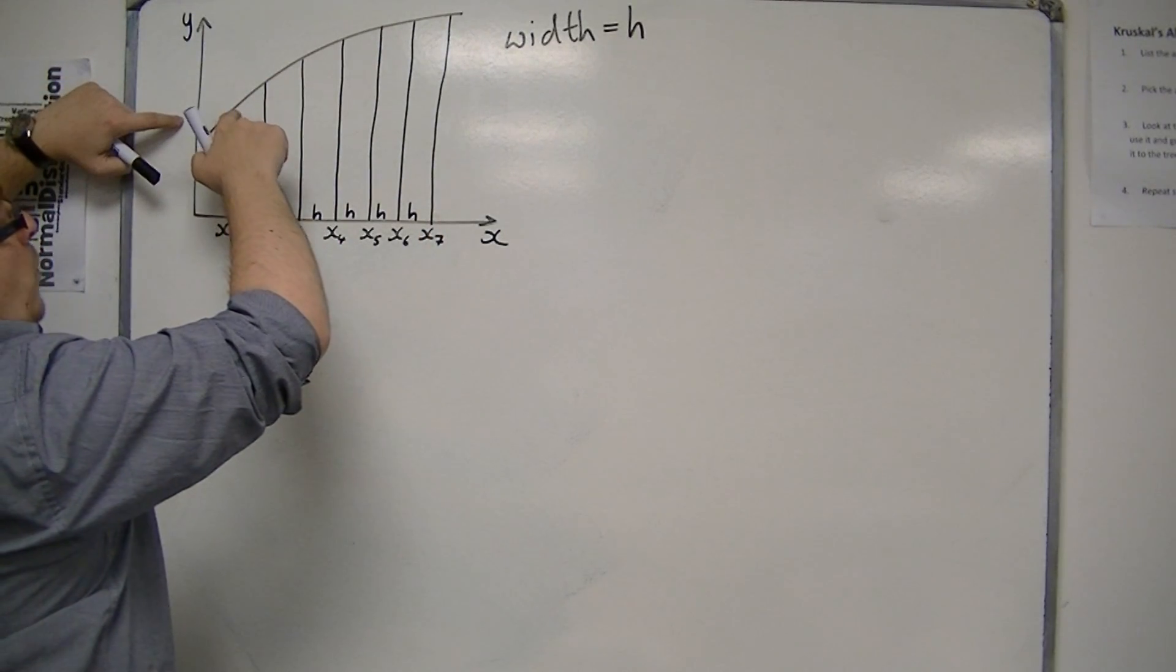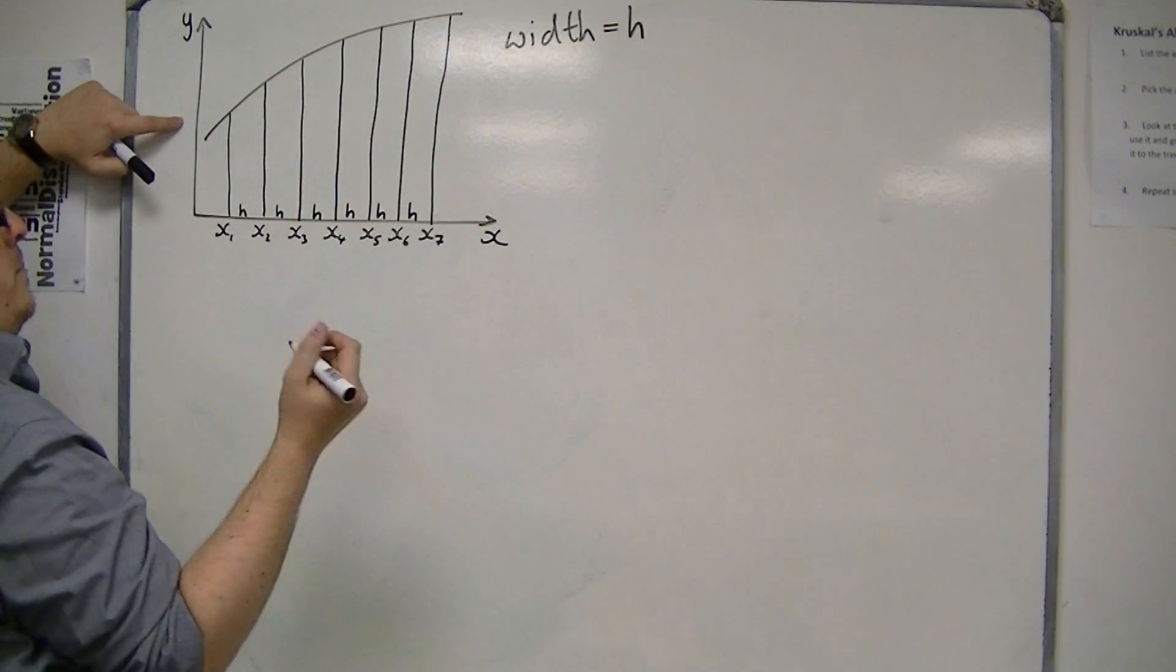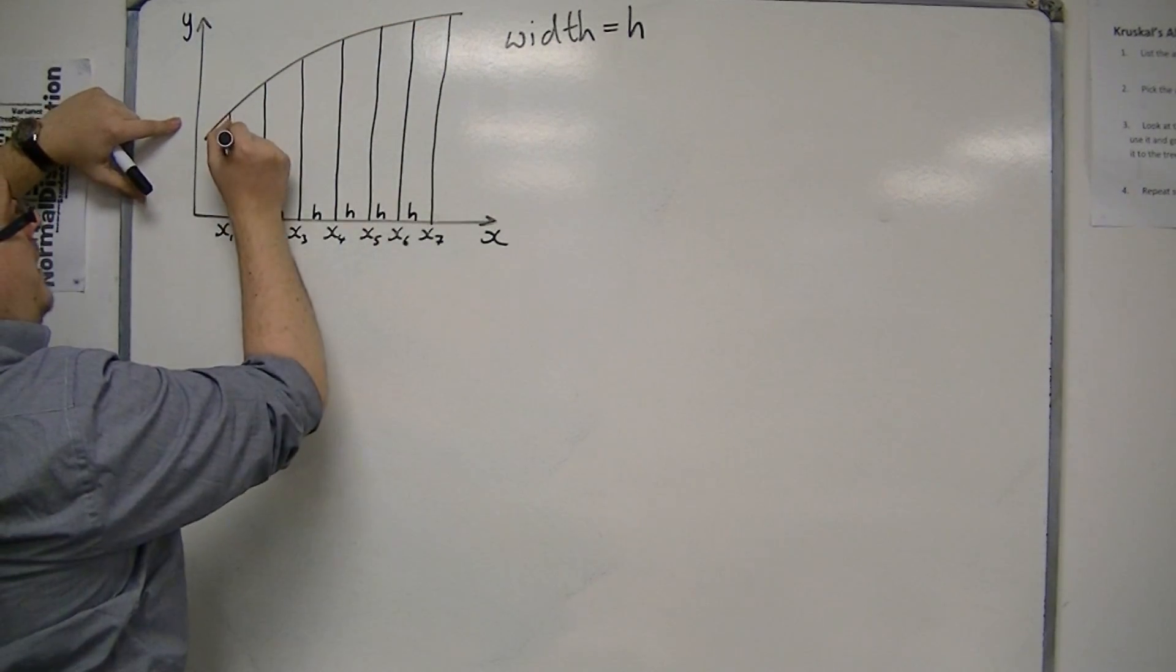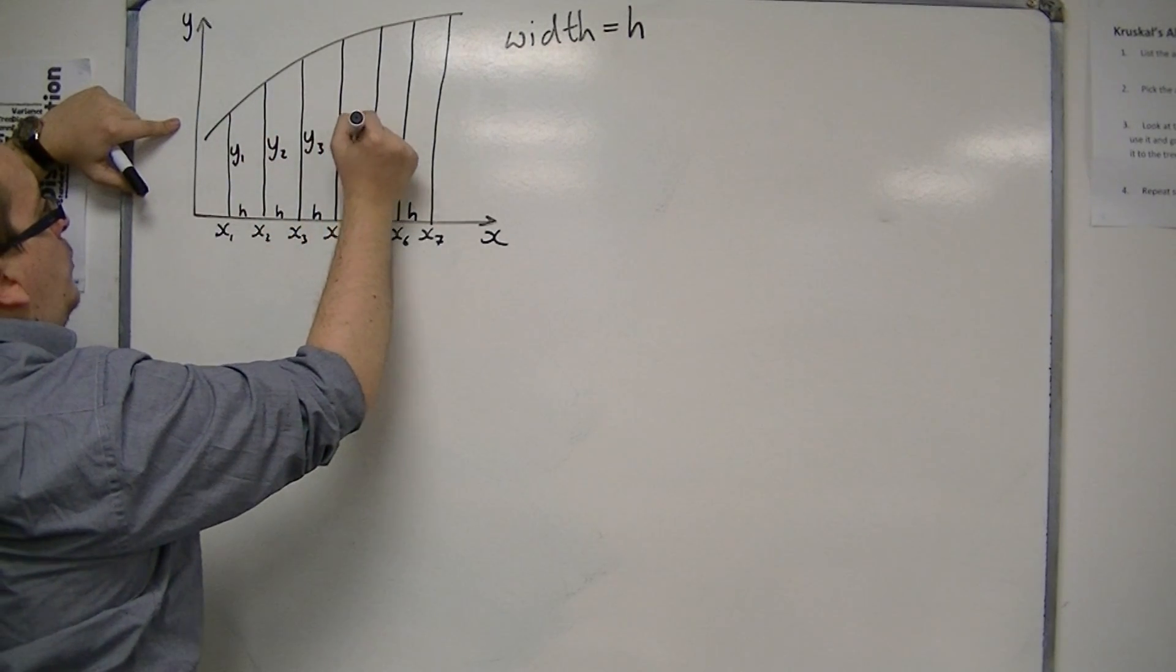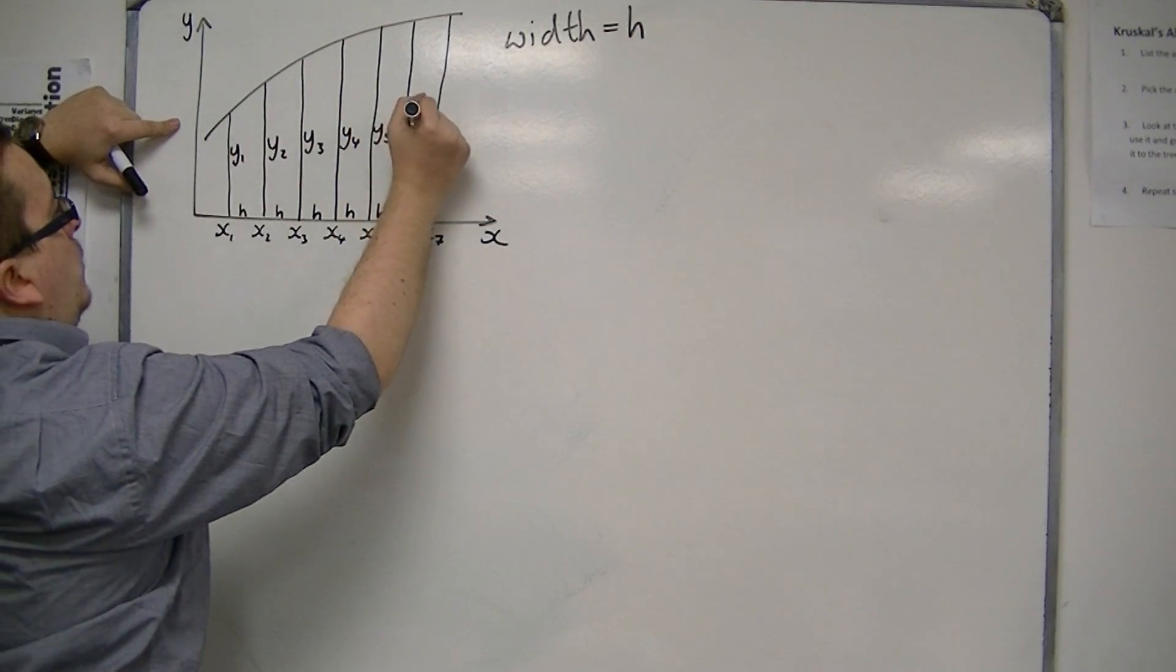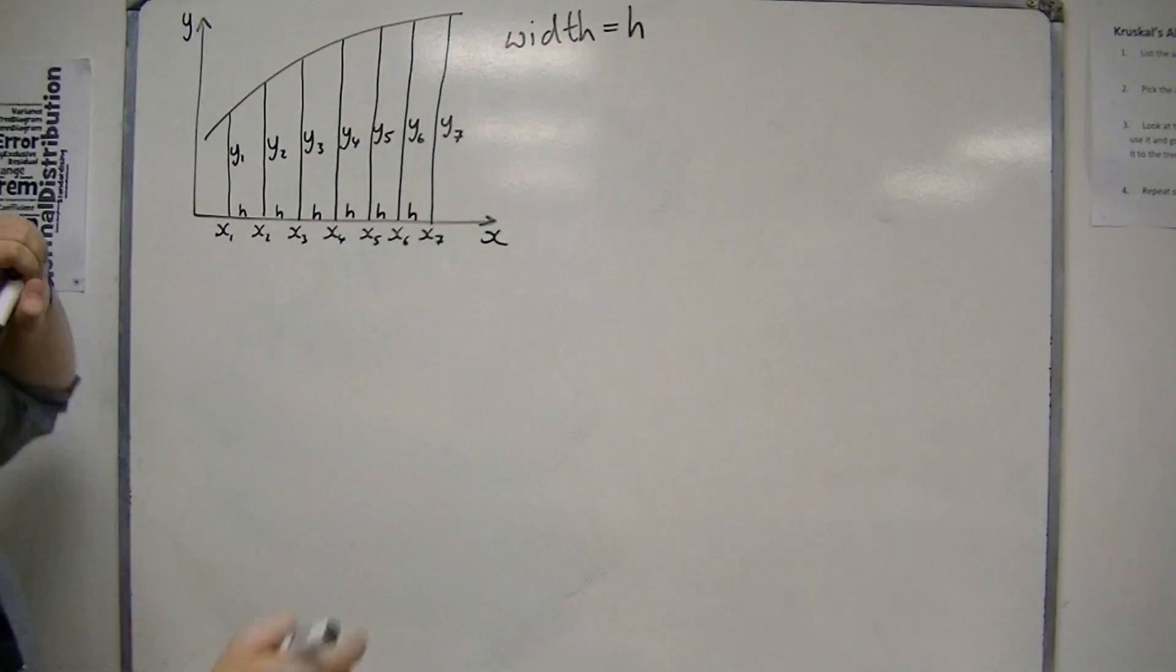And then I'm going to have these y-coordinates that will represent the heights of each of the bars. So I'm going to have y1, y2, y3, y4, y5, y6, and y7, corresponding to my x1 to x7.